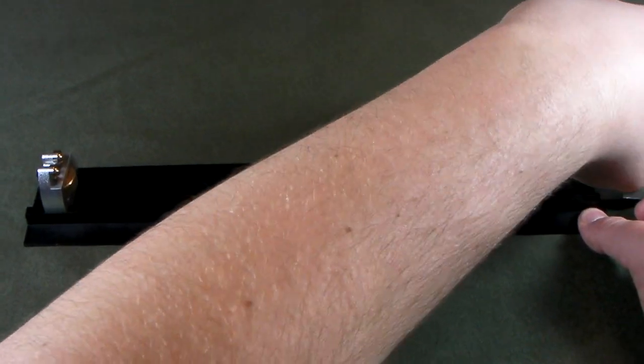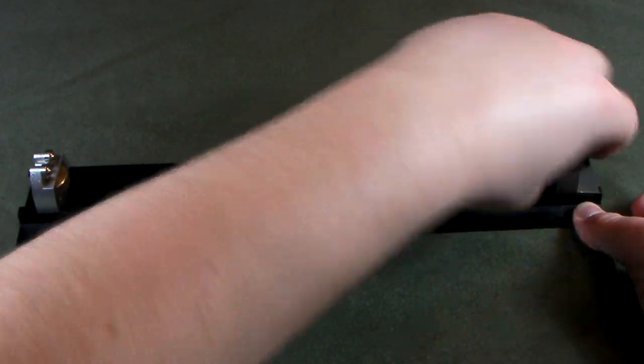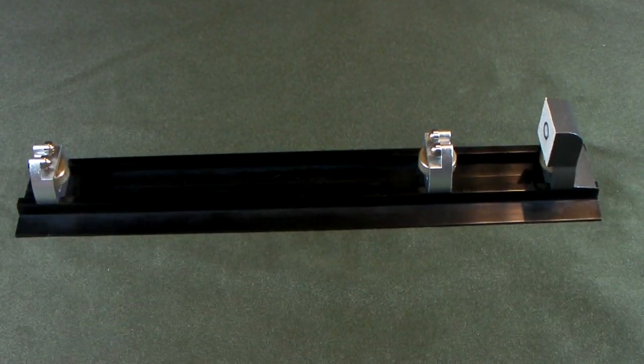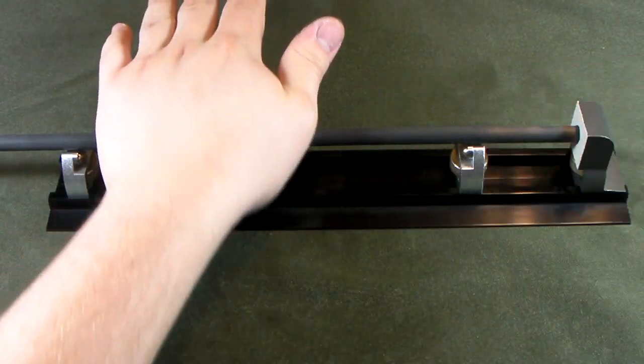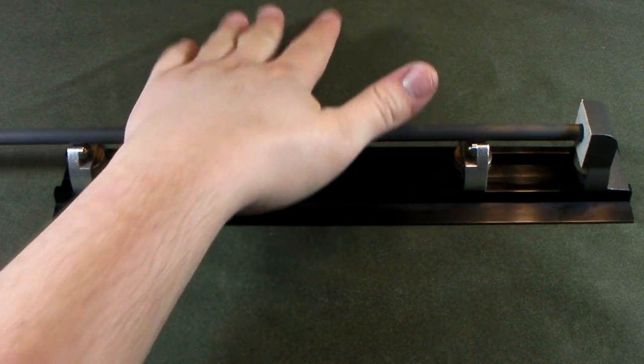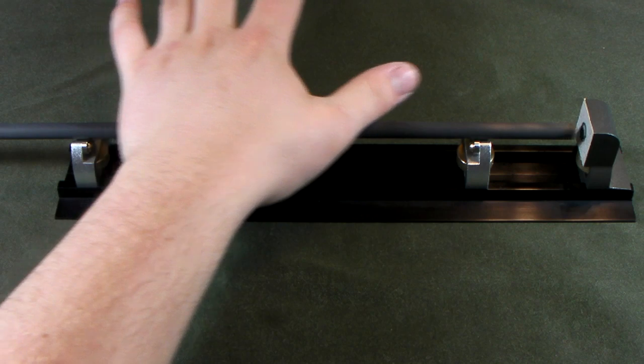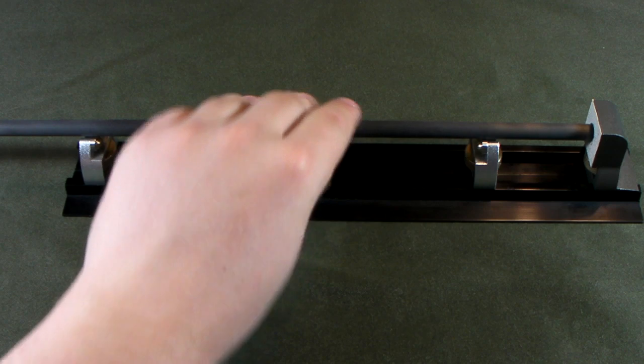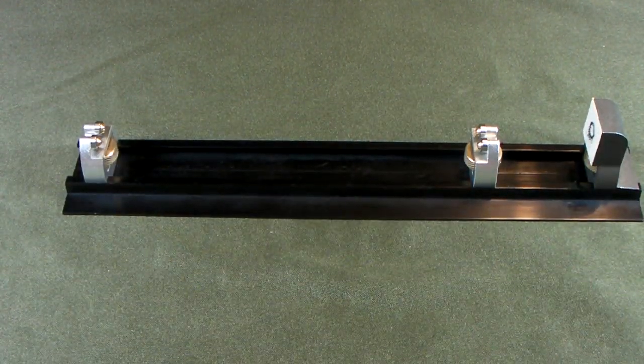And then put your grinding block on, tighten it down. I put mine all the way at the end, it's your choice where you want to put it. Then take your arrow shaft, use your palm and just rock it back and forth. As you do this you kind of want to push it in, squares it right up.